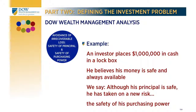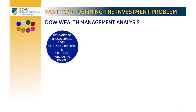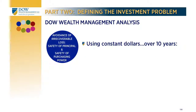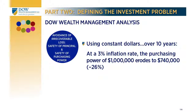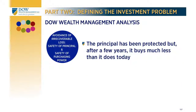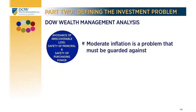The great risk borne by this investor is the safety of his purchasing power. Today's dollar, euro, pound, or other currency surely will not be as valuable ten years from now because of inflation — they won't even be as valuable one year from now. Using constant dollars at a 3% inflation rate, the purchasing power of a million dollars erodes to $740,000 in ten years — a 26% loss of purchasing power. At a 10% inflation rate, in just a decade a million dollars would be worth just $350,000 in today's currency. What have we accomplished if we succeed in protecting our principal but after a few years it buys much less?